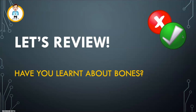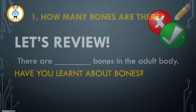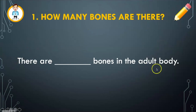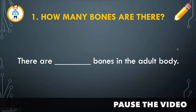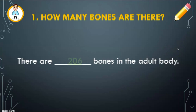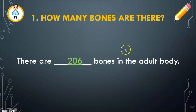Let's review to see how much you've learnt about bones. Number one: how many bones are there in the human adult body? Pause the video, write down this sentence on a piece of paper and write down your answer. There are 206 bones in the adult body. For a bonus point, how many bones are in a baby's body? That's right — 300.